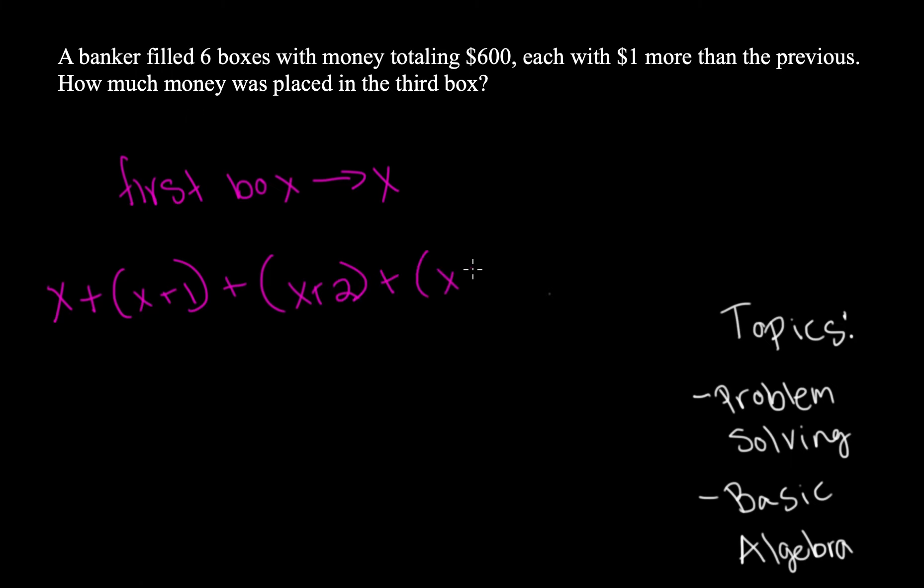plus 1 more than x plus 2, which would be x plus 3, plus x plus 4, plus x plus 5, equals 600.